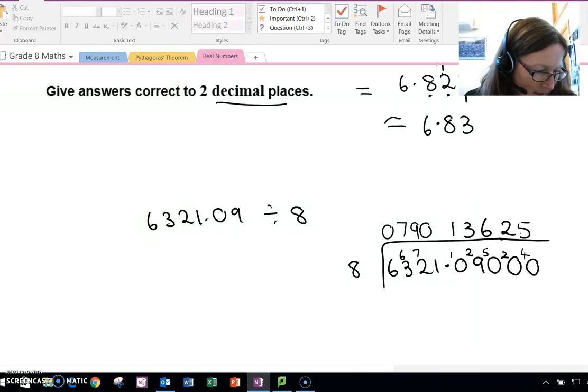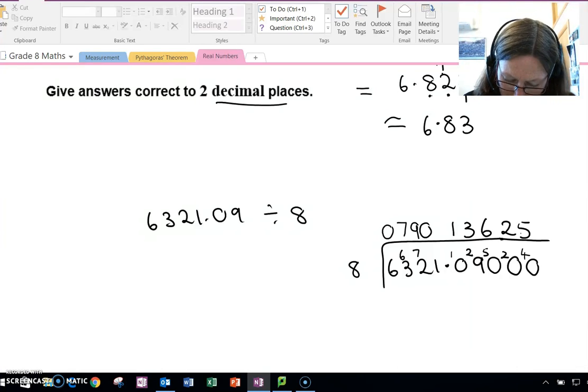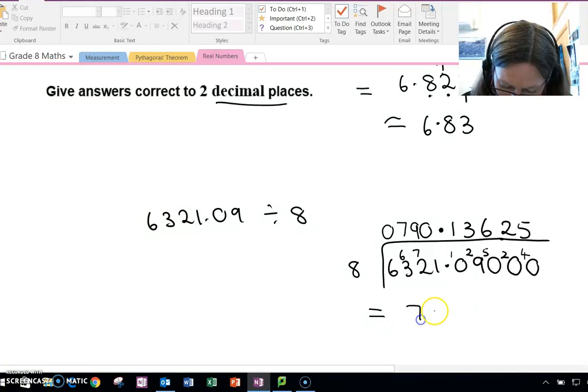So I've done the next step, divide the numbers the usual way. Now in my answer, I make sure my decimal point in the answer is directly above the decimal point in the question, so it goes there. So my answer here is 790.13625.